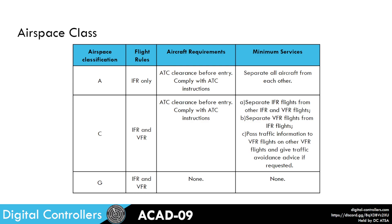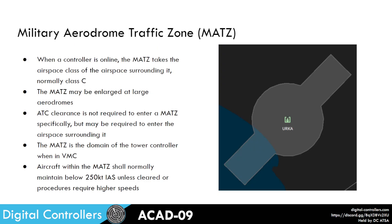So let's now move on and have a look at some different airspace structures, starting with the military aerodrome traffic zone, or MAT. When a controller is online, the MAT will take the airspace class of the airspace surrounding it, which for larger airfields tends to be class Charlie. Where we have large aerodromes with multiple runways running in multiple different directions, the MATs can be enlarged.